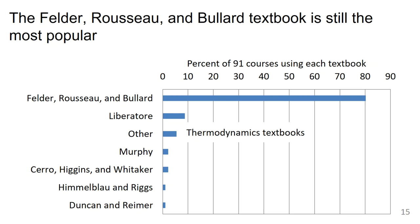We asked about the textbook used in the courses. The Felder, Russo, and Bullard textbook is used in 80% of the classes. The other category was primarily thermodynamics textbooks. The Felder, Russo, and Bullard textbook was about 86% in the previous survey ten years ago, so it has declined slightly in market share since then.